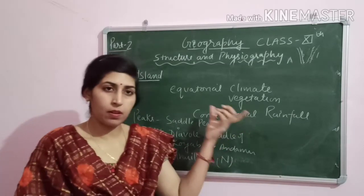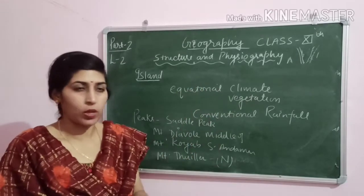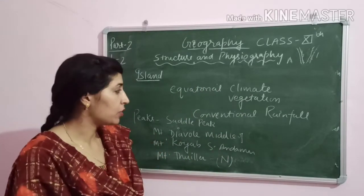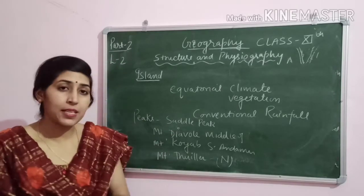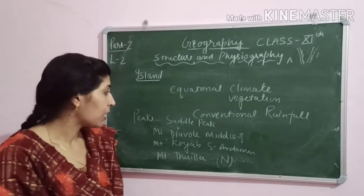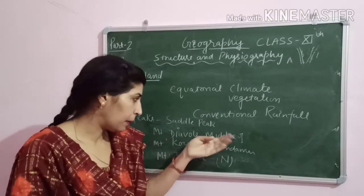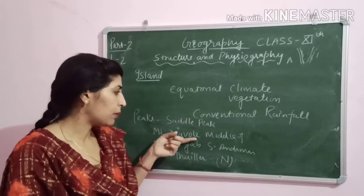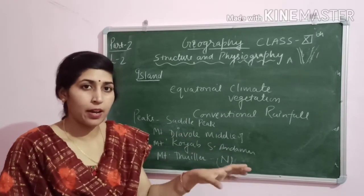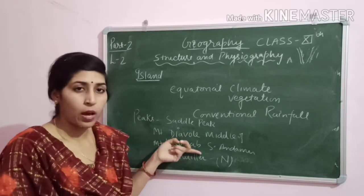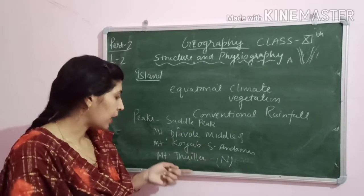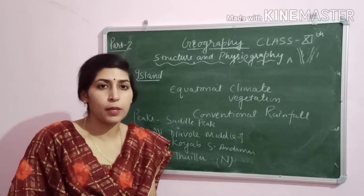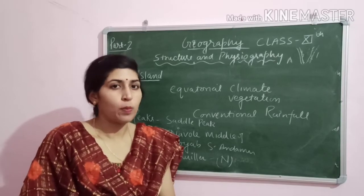The Andaman and Nicobar Islands have equatorial climate and dense forest vegetation. Some important peaks in the region include Saddle Peak in North Andaman, a peak in Middle Andaman, Mount Koya in South Andaman, and Thullier Peak in Nicobar.